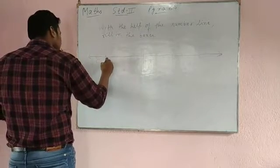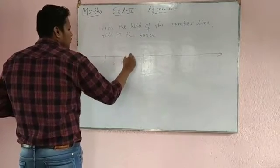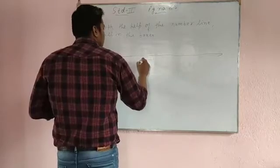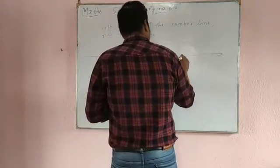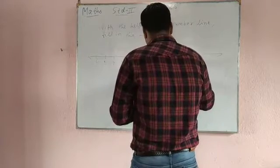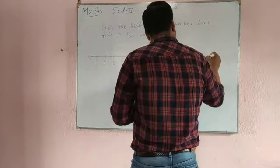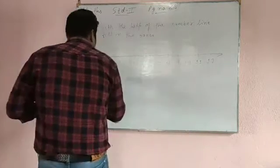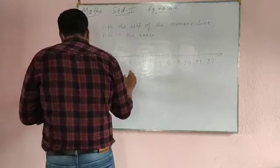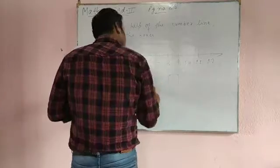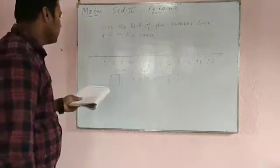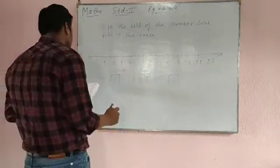Zero, one, two, three, four, five, six, seven, eight, nine, ten, eleven, twelve. Here are some boxes because you have to fill this box. The main work is that you have to fill the box.